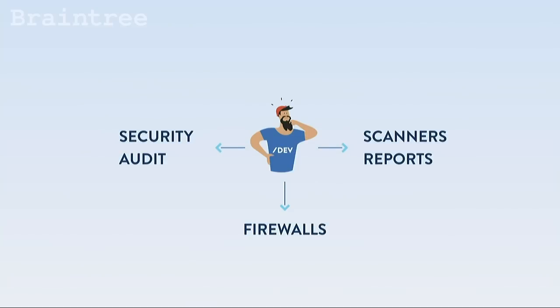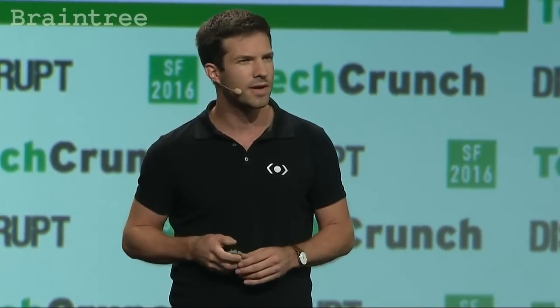So how could this happen? The last security audit was performed only a couple of weeks ago. You have scanners checking vulnerabilities in your code every day. And you even have firewalls in place that were supposed to block it. In fact, security audits cannot be performed each time your code is changed. Scanner reports are full of false positives — you don't trust them, you don't read the reports anymore. And the firewalls, they are way too permissive, because you cannot block legitimate traffic.